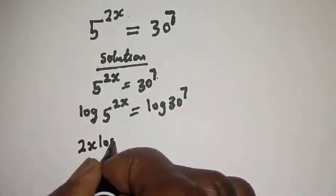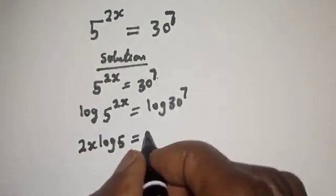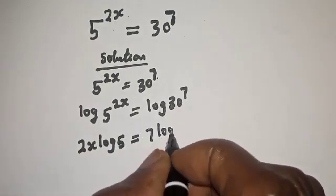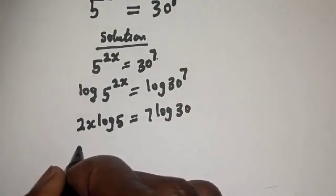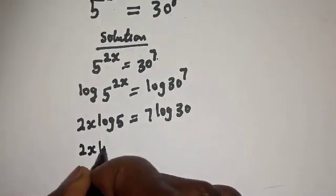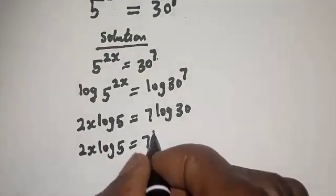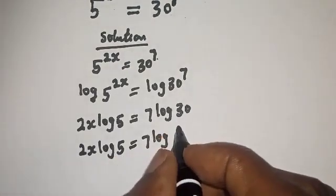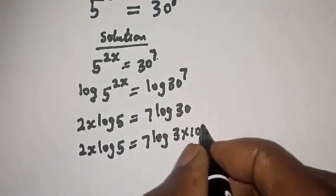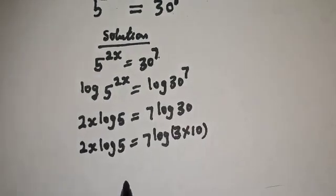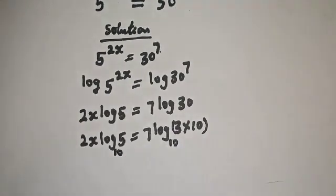2s log 5 is equal to 7 log 30. Now, 30 can be written as 3 multiplied by 10. Let's make everything base 10.